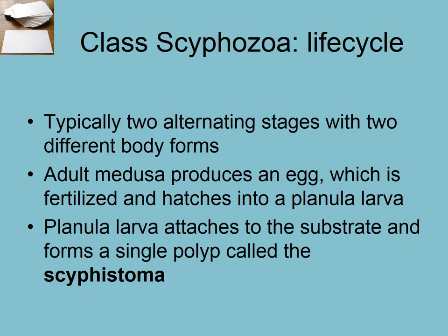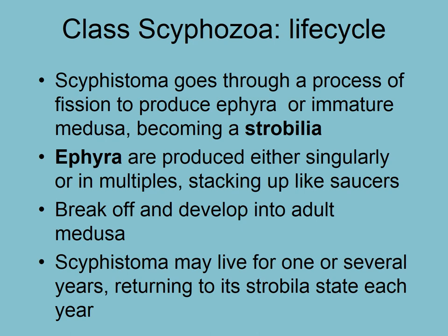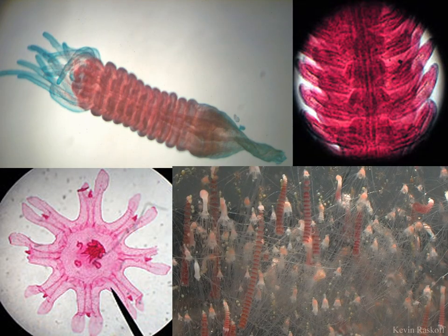Here is a picture of what a whole lot of strobila look like when they're just about to release. You can get massive jellyfish blooms because every one of those has a massive amount of ephyra ready to swim away, which can lead to huge jellyfish blooms — so many that they can clog intakes of nuclear power stations. That is the end of this third Cnidaria video, and we will talk about the last class, Anthozoa, in the fourth.